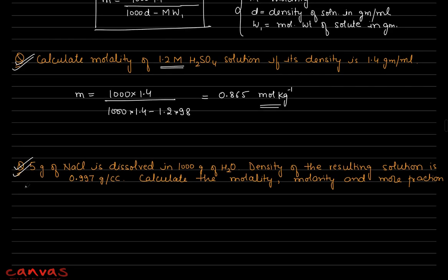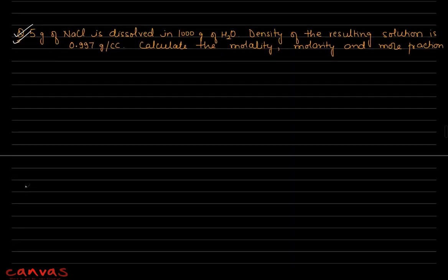Next question: 5 grams of NaCl is dissolved in 1000 grams of water. The density of the resulting solution is 0.997 g/cc. Calculate the molality, molarity, and mole fraction.